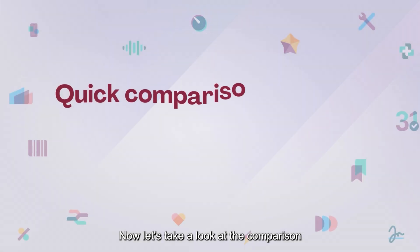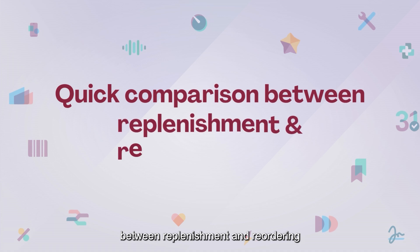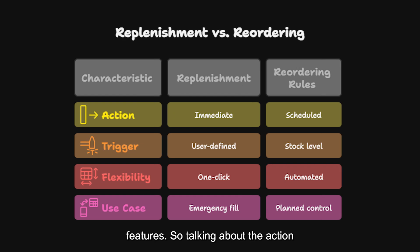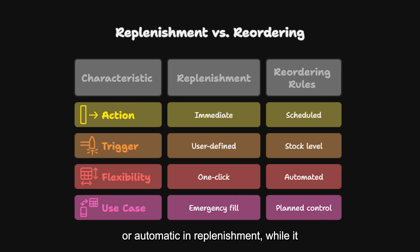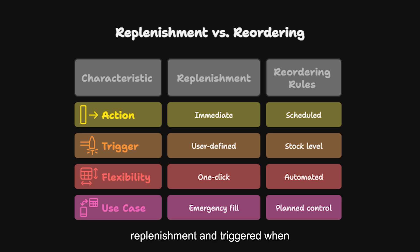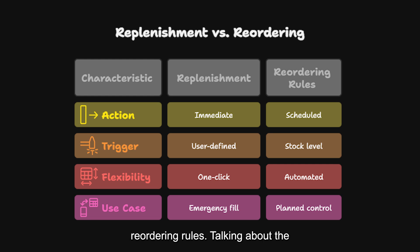Let's take a look at the comparison between Replenishment and Reordering Rules in Odoo 18, highlighting their key features. For the action feature, it is immediate — manual or automatic — in Replenishment, while it is scheduled and automatic in Reordering Rules. For the trigger feature, the user decides when to replenish in Replenishment, whereas it is triggered automatically when stock falls below the minimum quantity in Reordering Rules.